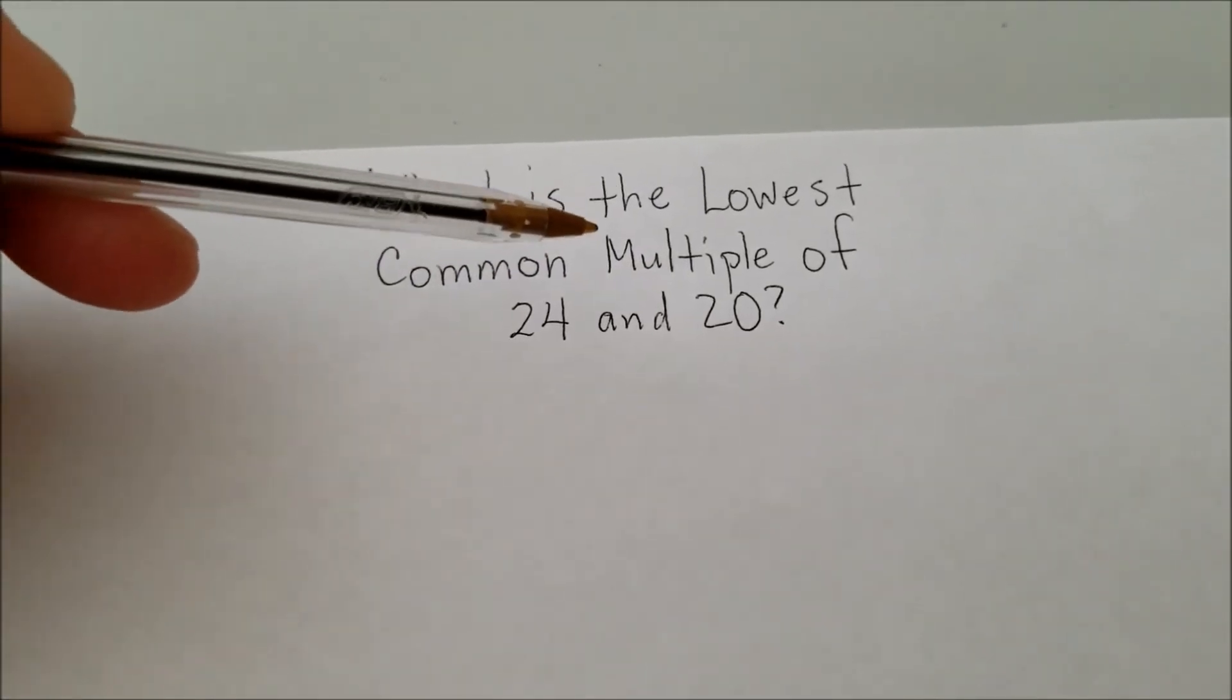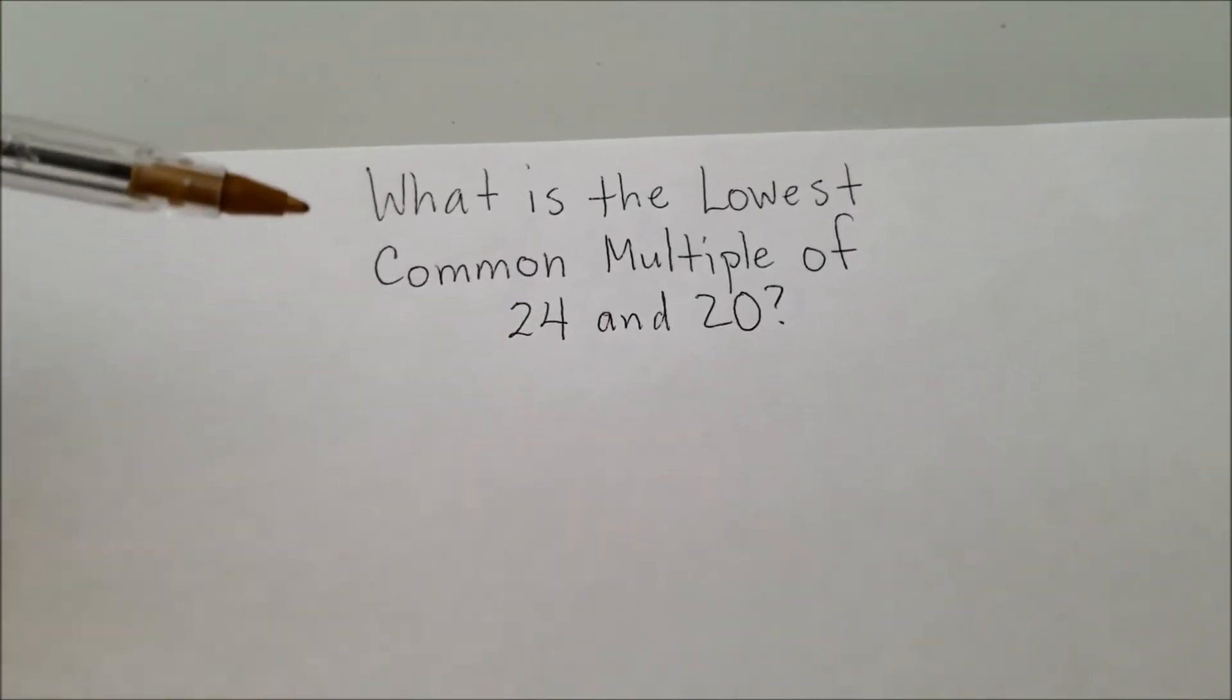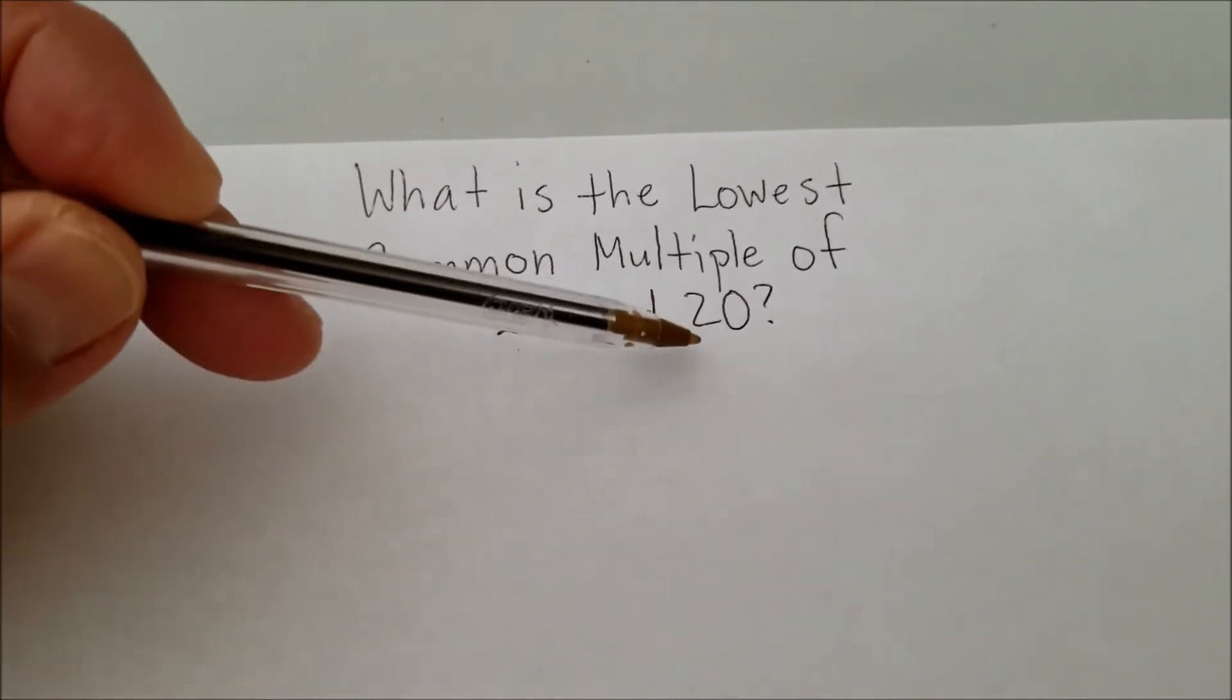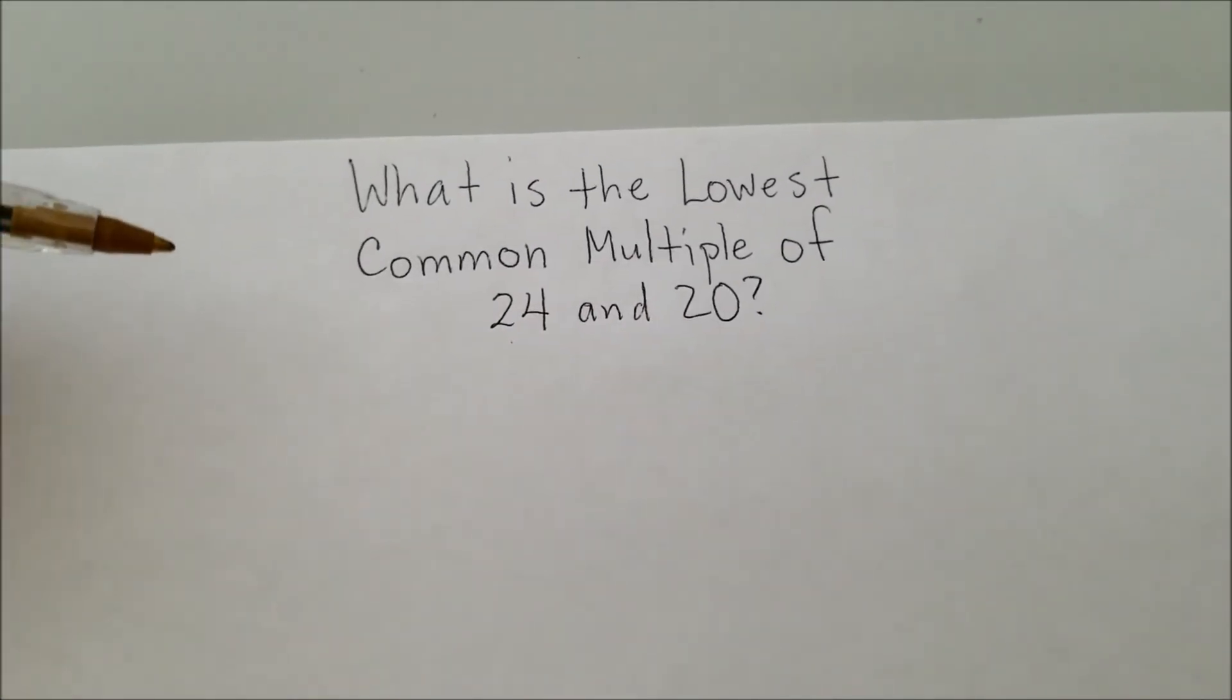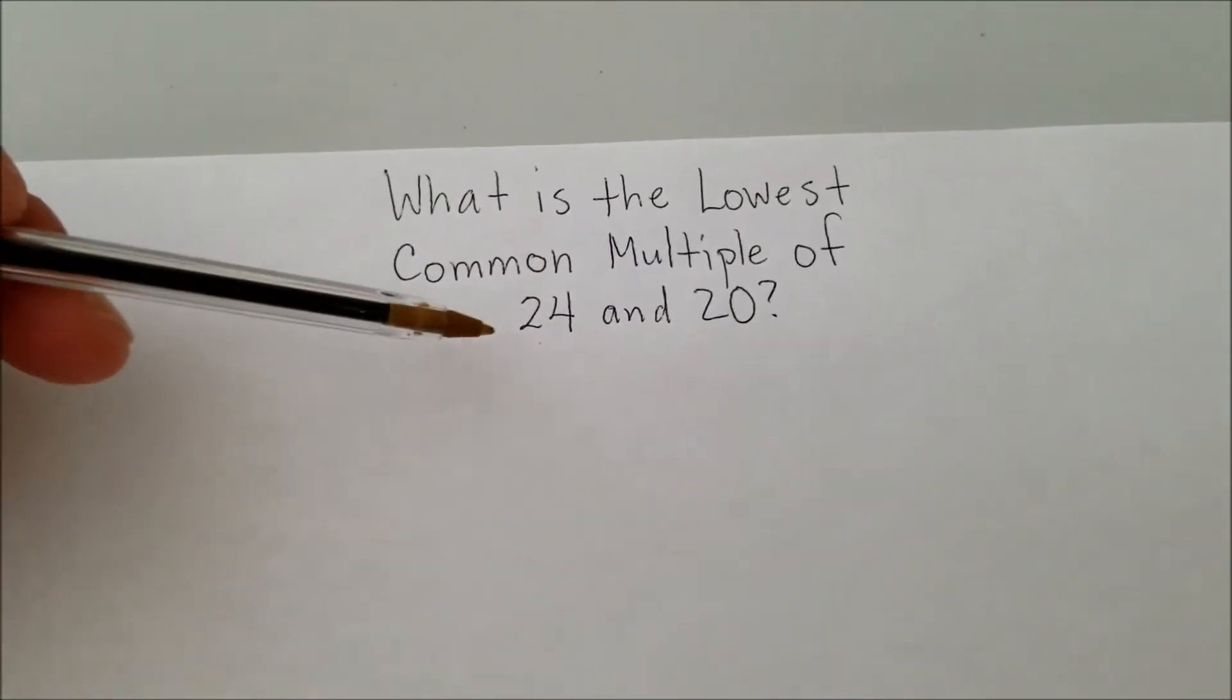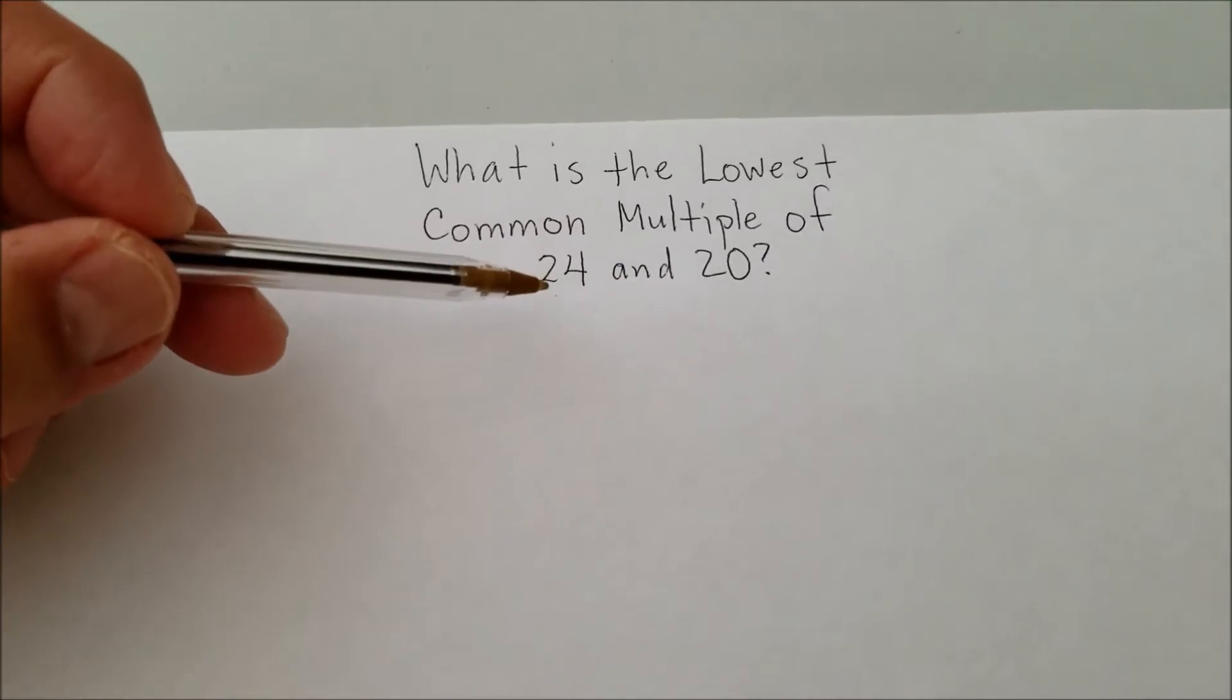So basically, when we're looking for the lowest common multiple of 24 and 20, if I can put it in simplest terms here, it would be what is the smallest number that has 24 and 20 as a factor? So this number is going to be quite large because we're multiplying 24 and 20 to get this number. So it's going to obviously be bigger than 24 and 20.